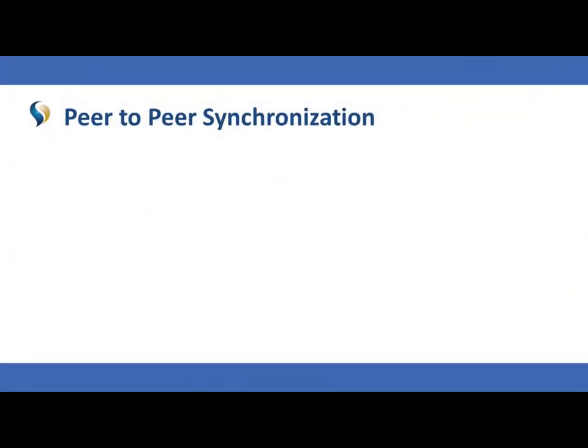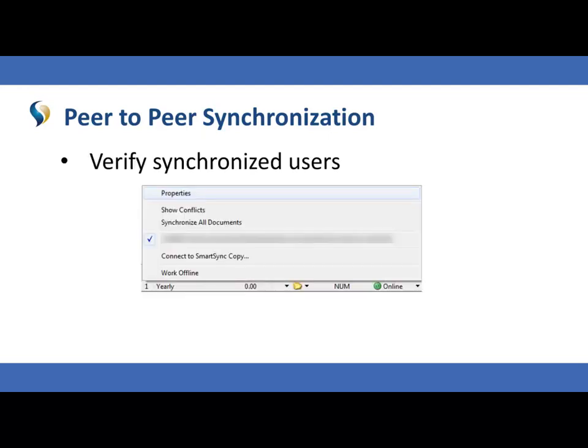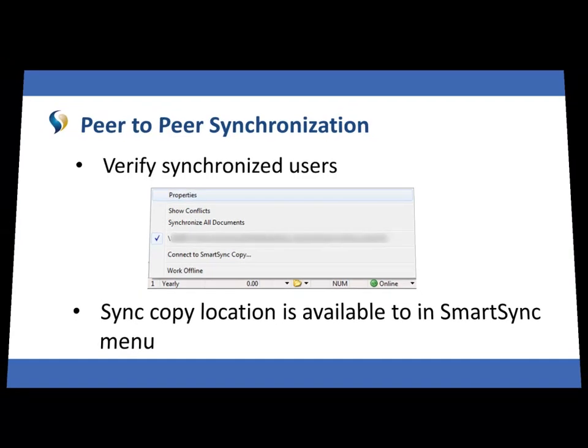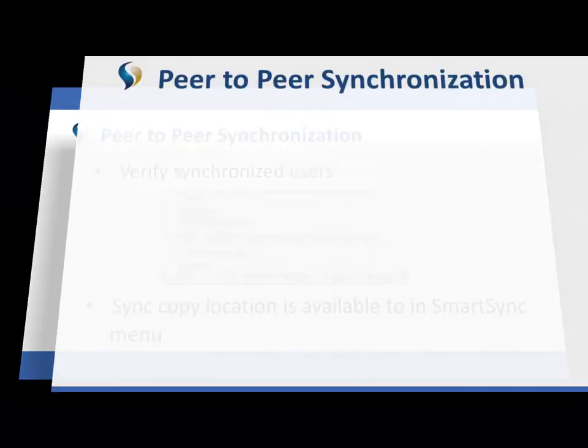As a parent, when connected to the external drive, you will be able to verify the users that are synchronized to the sync copy by accessing the properties on the sync toolbar. Once peers have located the sync copy, it will be displayed in their synchronization drop-down menu below the parent file location.